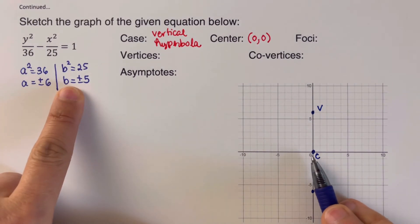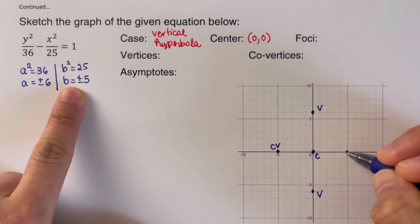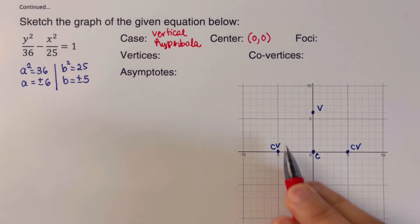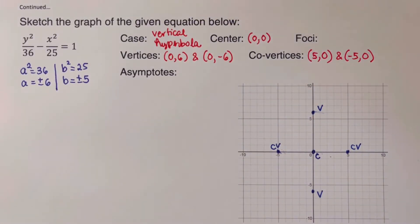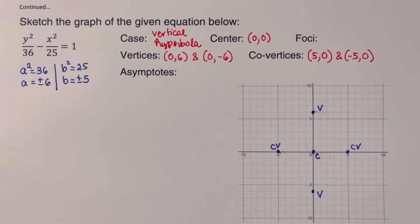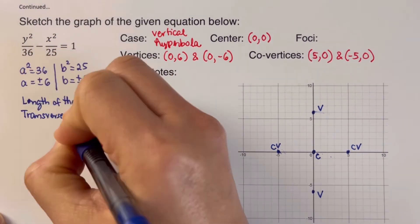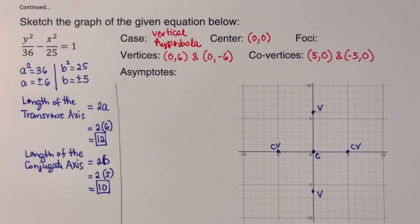The co-vertices are located five units to the left and five units to the right. We write the coordinates of the two vertices and the two co-vertices. The length of the transverse axis is 2a equals twelve, and the length of the conjugate axis is 2b equals ten. We then draw the rectangle that will help us draw the asymptotes and eventually the hyperbola.